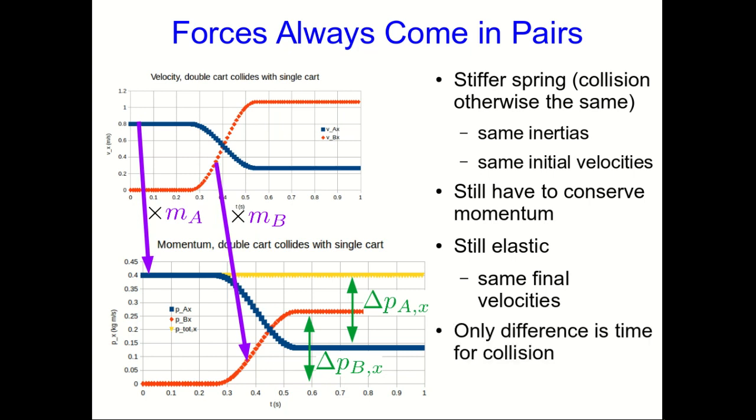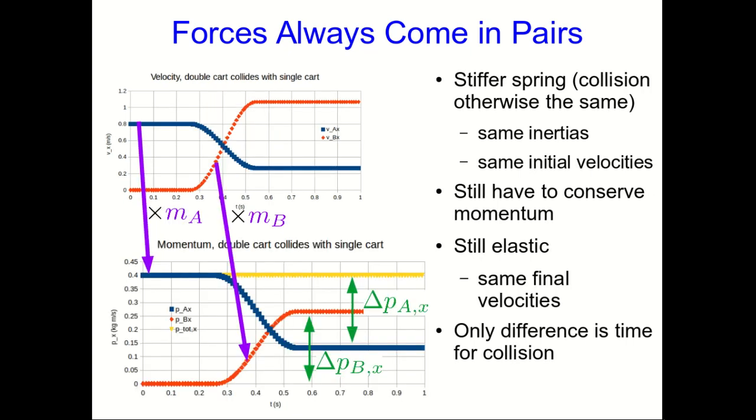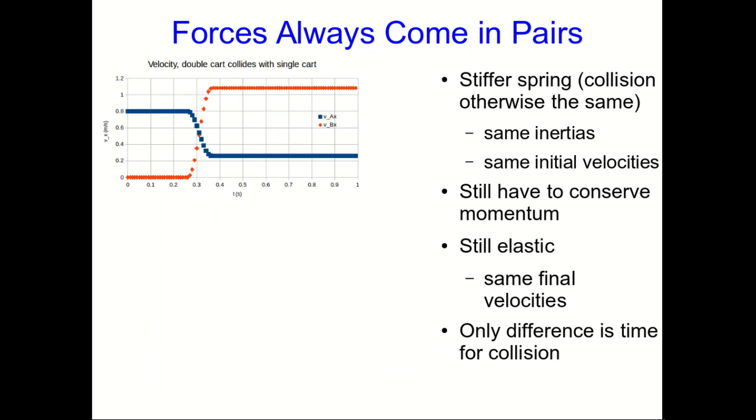So the only difference is going to be the time for the collision to take place. And so our Vx versus t graph would look like this, where if you compare that with the previous one, the initial and final velocities of the carts are identical. All that's happened is that the collision time has reduced.